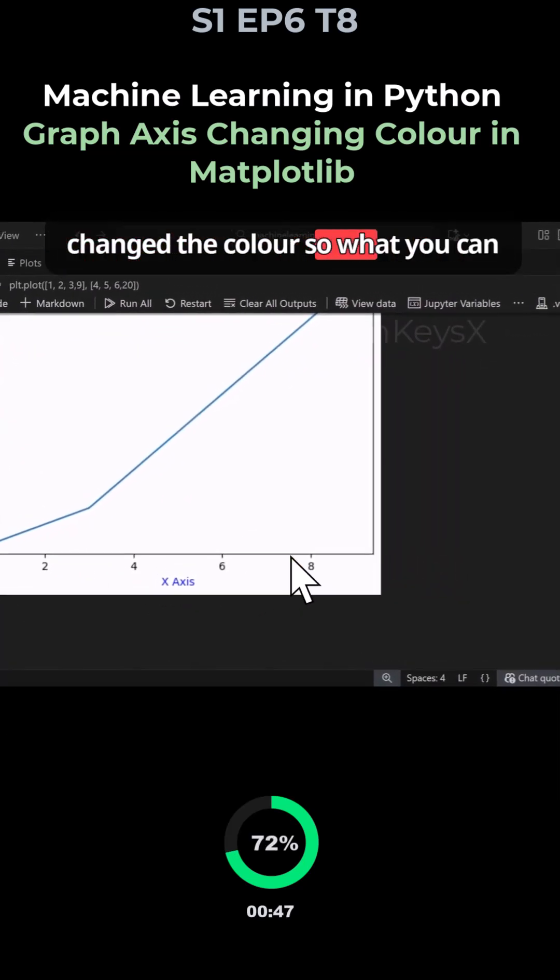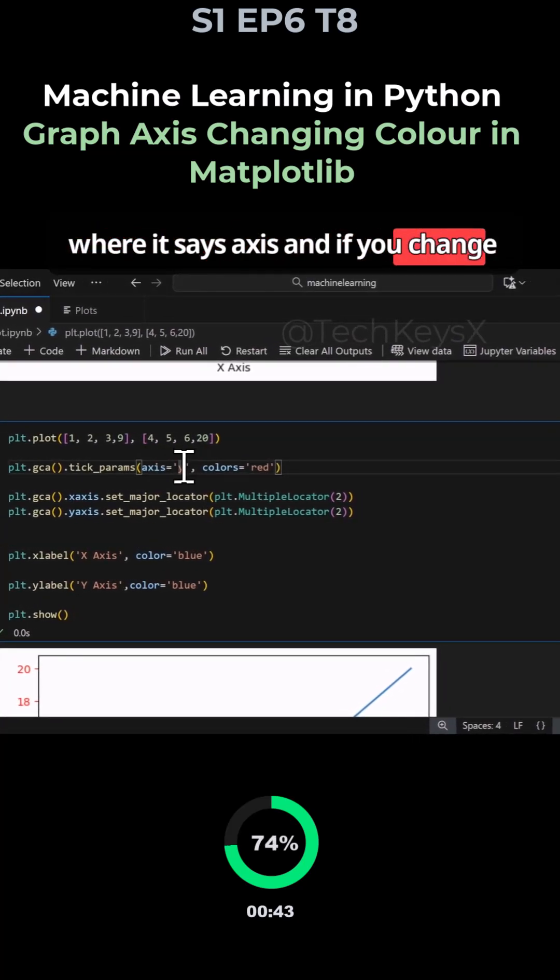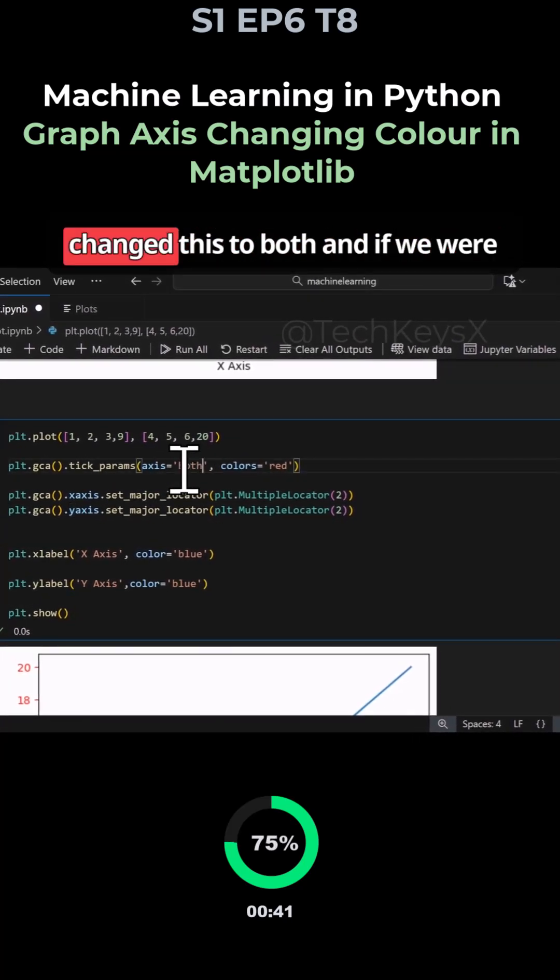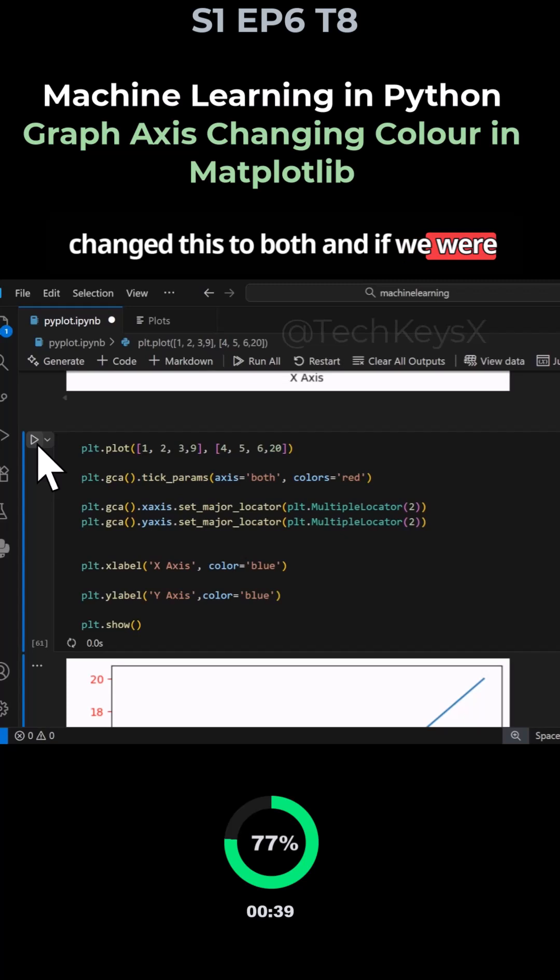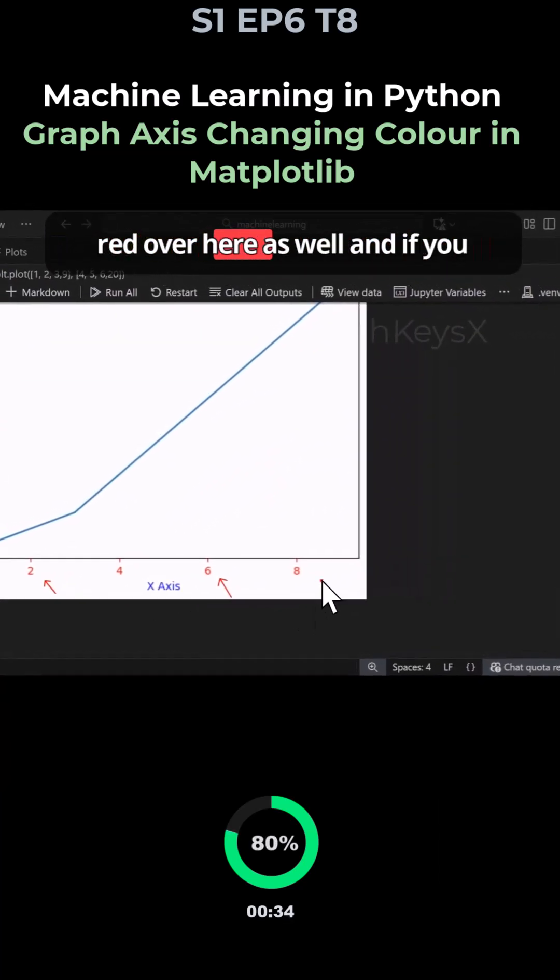What you can do is come over here and where it says axis, change that to both. So we have now changed this to both and if we were to run this over here, you can see this has now changed to red over here as well.